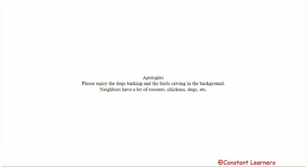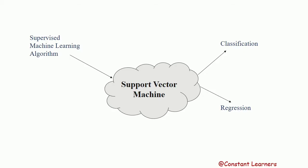Hello learners and welcome back to Constant Learners. In today's video we are discussing support vector machine. Support vector machine is a kind of supervised machine learning algorithm. In the previous video we discussed logistic regression, which was also a type of supervised machine learning algorithm used to solve classification problems. Support vector machine can be used to solve both classification as well as regression problems, but today we are discussing support vector machine for classification.